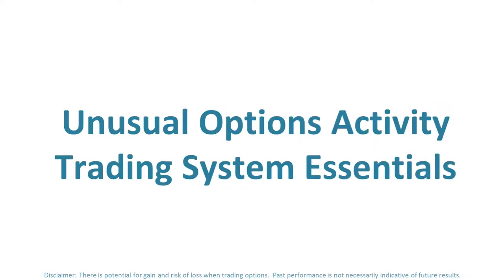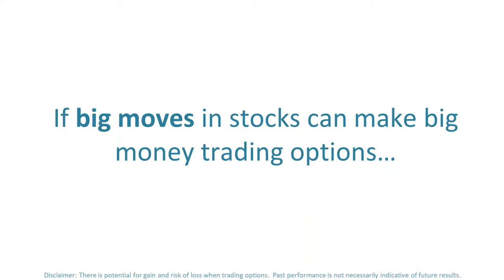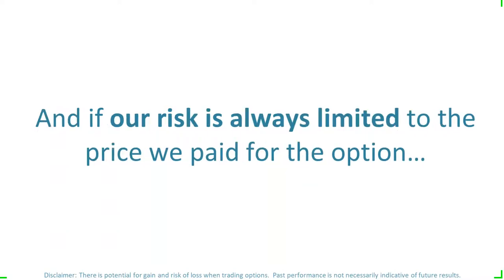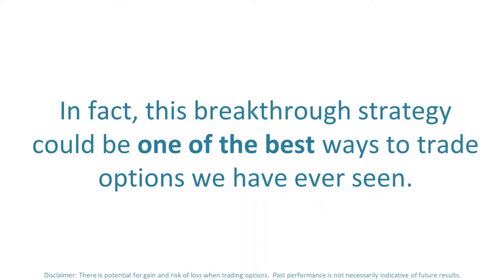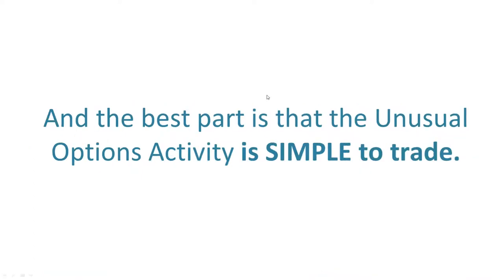Unusual option activity trading system essentials: if big moves in stocks can make big money trading options, and if our risk is always limited to what we pay for the option, then unusual option activity may be the ultimate trading strategy. This breakthrough strategy could be one of the best ways to trade we have ever seen. The best thing about unusual option activity is it's simple to trade. My father is 71 years old — turns 72 in April — doesn't even use his cell phone, and he takes some of these trades.